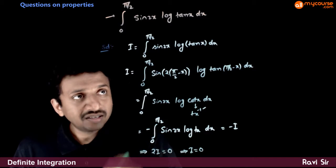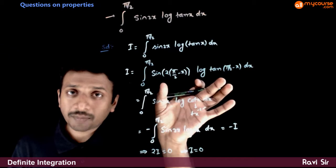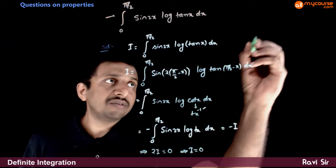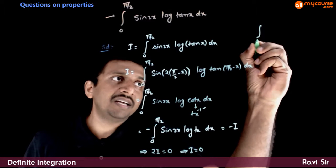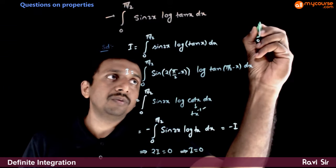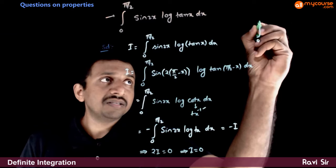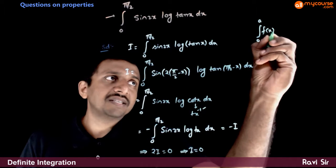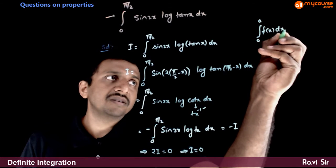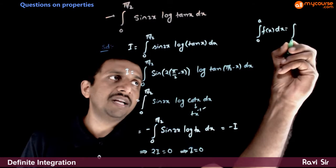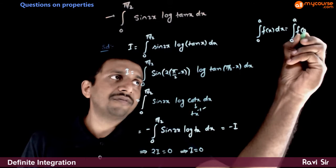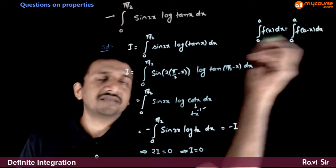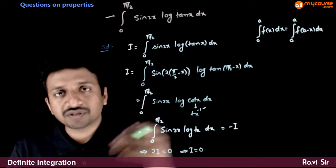Here we have done it using one particular formula: the integral from 0 to a of f(x) dx is equal to the integral from 0 to a of f(a - x) dx. I have used this formula.